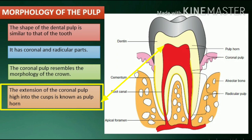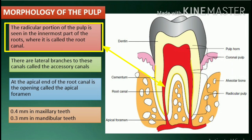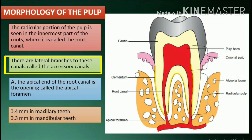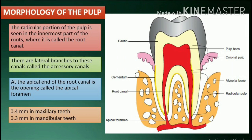The extension of the coronal pulp high into the cusps is known as the pulp horn. The radicular portion of the pulp is seen in the innermost part of the roots, where it is called the root canal. There are lateral branches to these canals called accessory canals. At the apical end of the root canal is the opening called the apical foramen, through which the pulp communicates with the periapical tissues.